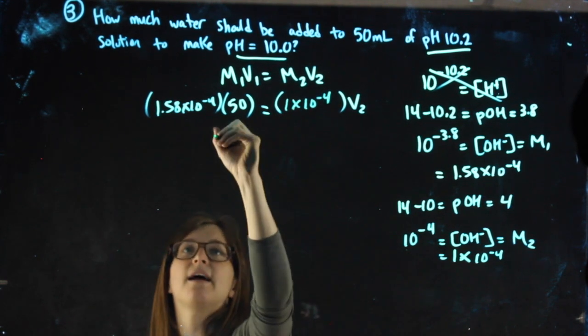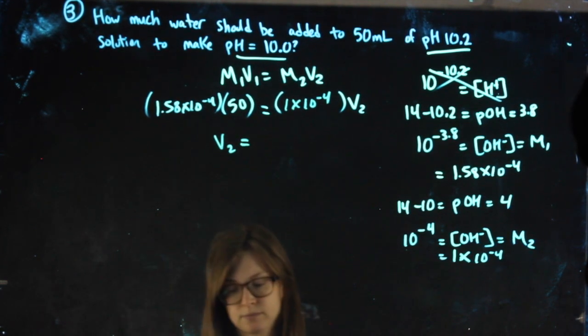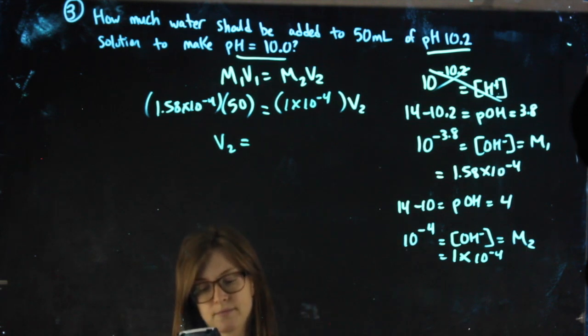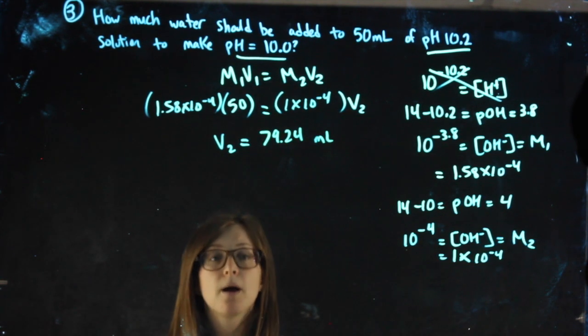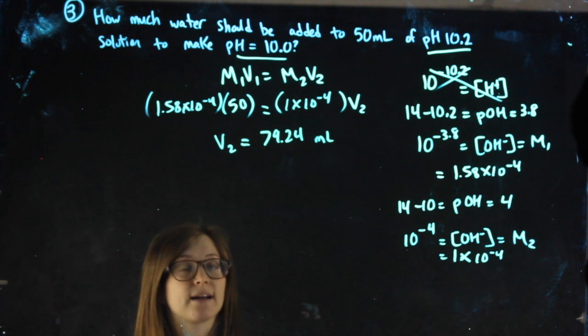Multiply, then divide, and that will get me V2. 79.24 milliliters. But the question asks for how much water was added.